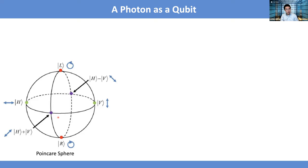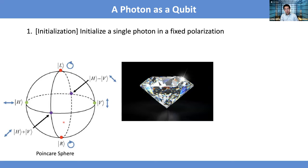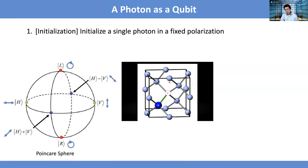One first thing is: how do we initialize the single photon? You can do it with a single photon emitter — you can control the emitted photon with a fixed polarization, and then you can initialize such a single photon. Some good emitters could be defects in diamond called nitrogen-vacancy centers in diamond.